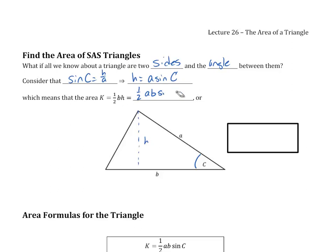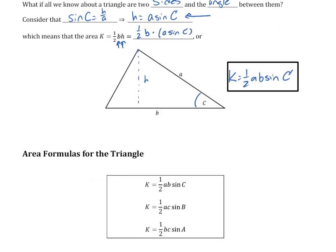Just to see where I got that, let me rewrite it. If I put B here times the H that I just derived, I get A sine of capital C. And just to write A and B in alphabetical order, I would say K is equal to one-half AB sine of the angle between them, which is angle C. That would work for any particular angle.